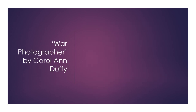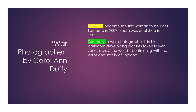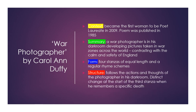War Photographer by Carol Ann Duffy. She became the first woman to be poet laureate in 2009 and this poem was published in 1985. A war photographer is in his dark room developing pictures taken in war zones across the world, contrasting with the calm and safety of England. The form has four stanzas of equal length and a regular rhyme scheme. The structure follows the actions and thoughts of the photographer in his dark room, with a distinct change at the start of the third stanza when he remembers a specific death.